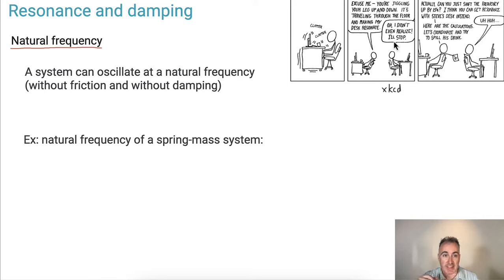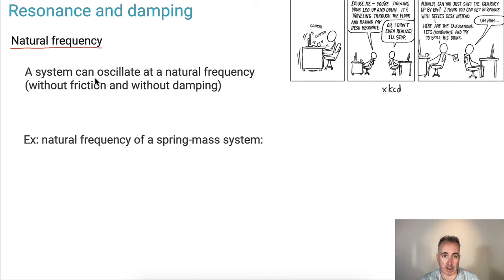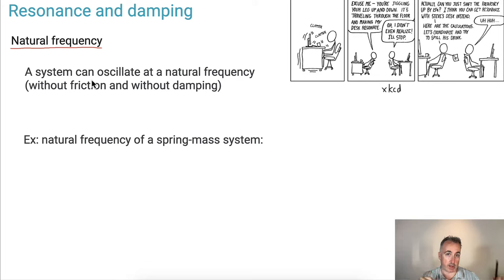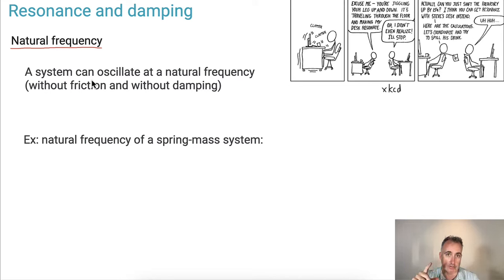It actually has to do with this: any system — or at least many systems — can oscillate at what's called a natural frequency. It's the frequency at which it will readily vibrate, assuming there's no friction and no damping. For example, greenhouse gases can vibrate at a certain natural frequency. That's why infrared light from the sun gives them exactly the energy they need to vibrate, and that's why they can heat up the atmosphere.